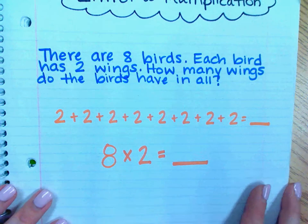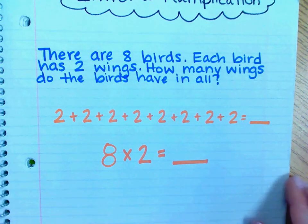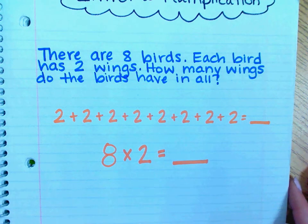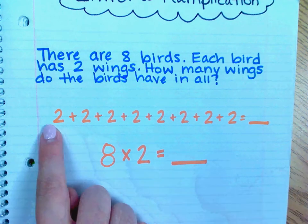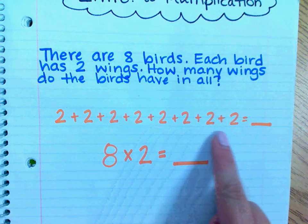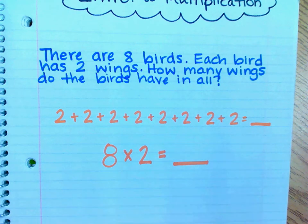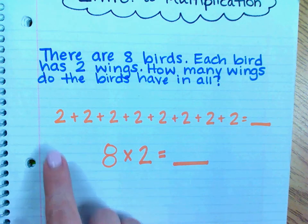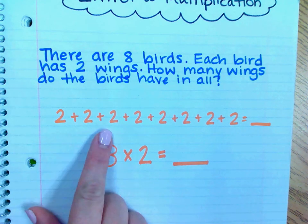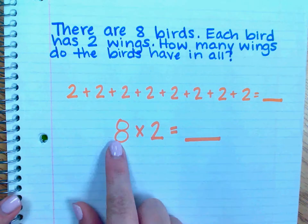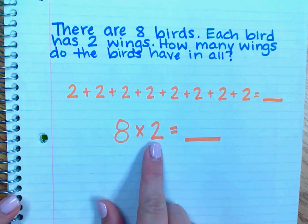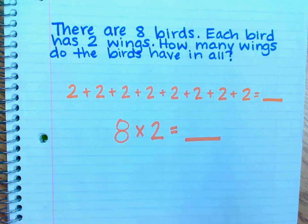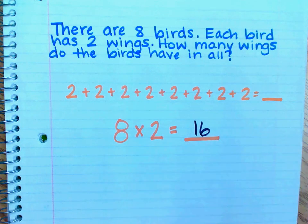Here's an example: There are eight birds. Each bird has two wings. How many wings do the birds have in all? We could add up to find the total number of wings, but that takes a lot of time. Since we know that there are equal groups, we can just write a multiplication problem, such as 8 times 2, and then quickly solve it, knowing 8 times 2 is 16.